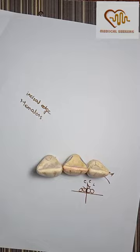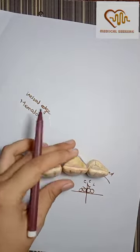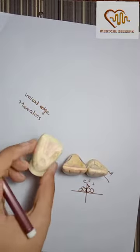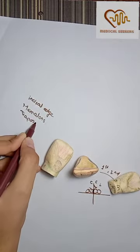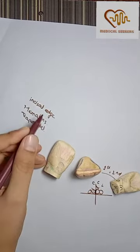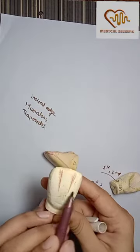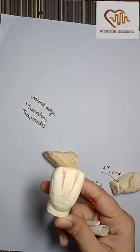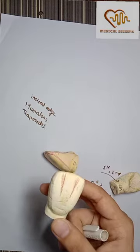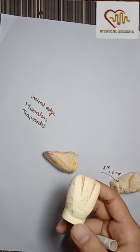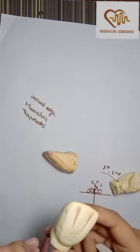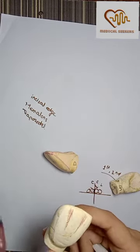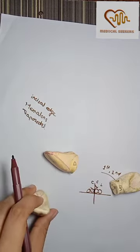If we talk about the form and function, if we look at the crown labially or lingually, the crown shape will be trapezoidal. This will be mesiodistally wide. If we ask the teeth having the most wide mesiodistal dimension is the maxillary central incisor. This is a point you can remember.